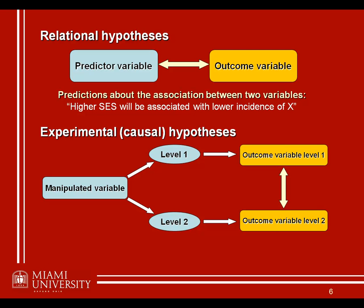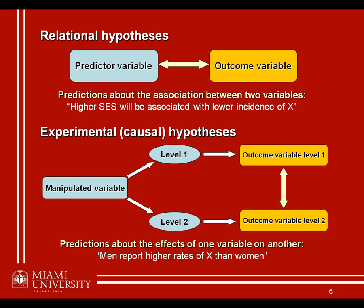Sometimes this manipulated variable isn't manipulated at all. Maybe it's something like gender — such as a prediction or hypothesis that men report higher rates of stress or burnout than women. Now what you might notice here — and I know we've covered these concepts before — the blue shaded terms on the left-hand side are typically what we've been referring to as the independent variables, and on the right-hand side in yellow as the dependent variables.